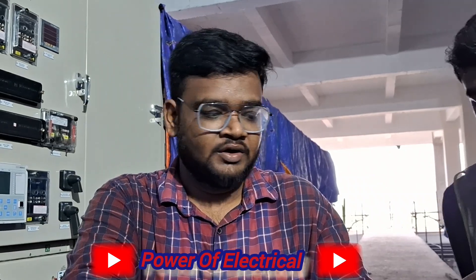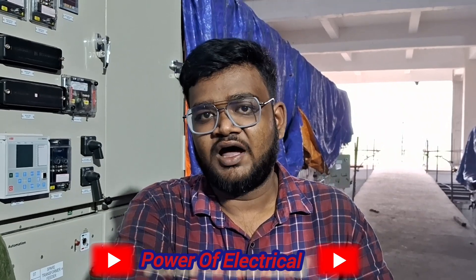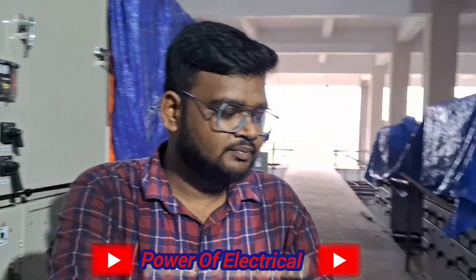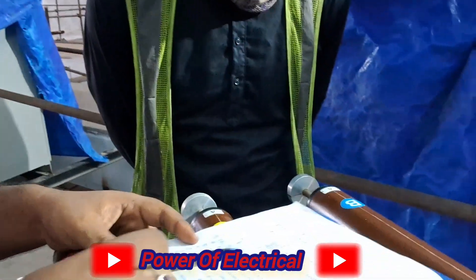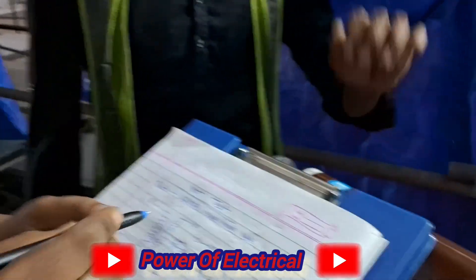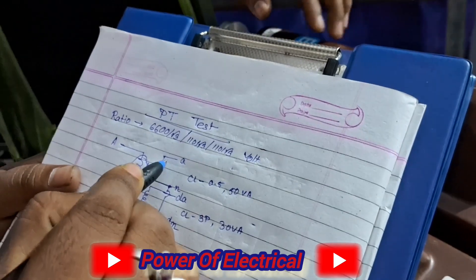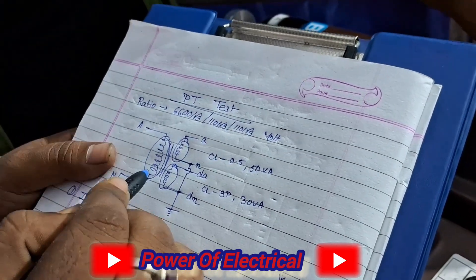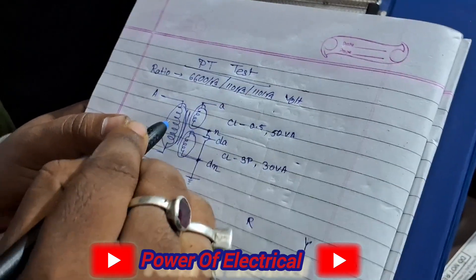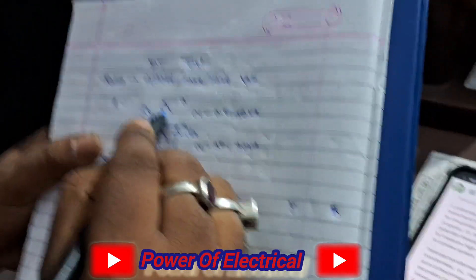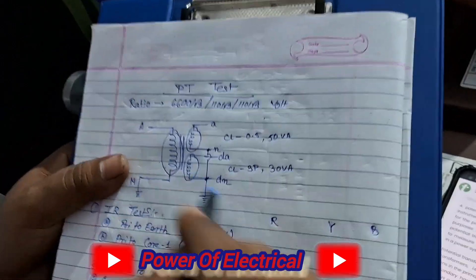Hello friends, welcome to my YouTube channel Power of Electrical. Today we discuss about potential transformer or PT. A potential transformer is an instrument transformer — a step-down transformer. We use this transformer in power systems to measure high voltage. If we look at the basic PT diagram, we can see the primary coil and secondary coil. The primary side is high voltage, so the number of turns on the primary side is less than the secondary side.